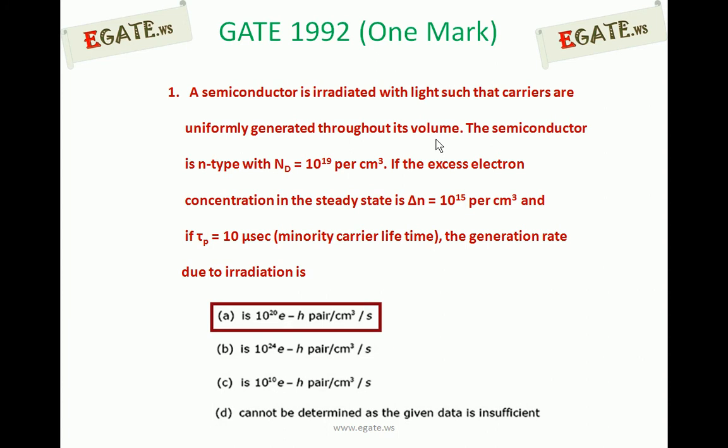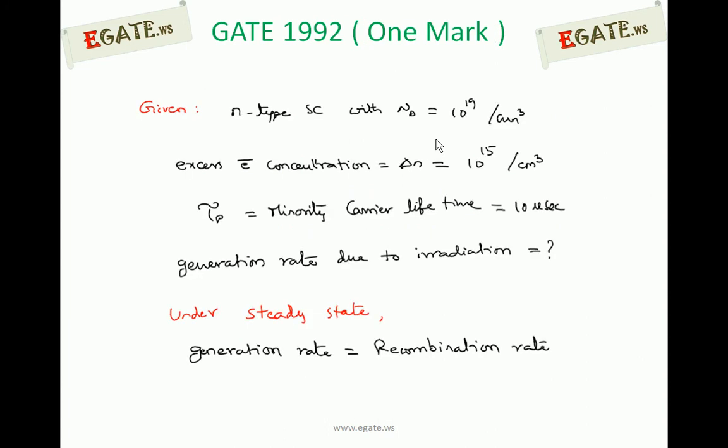Let's see the details now. The given information is: n-type semiconductor with donor concentration Nd equal to 10 power 19 per centimeter cube. Excess electron concentration delta N is given as 10 power 15 per centimeter cube. Tau p is the minority carrier lifetime — in an n-type semiconductor, electrons are majority carriers and holes are minority carriers, so tau p is the hole lifetime, equal to 10 microseconds.